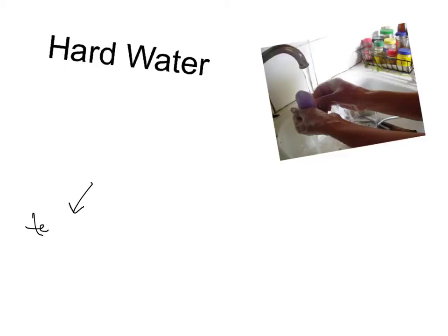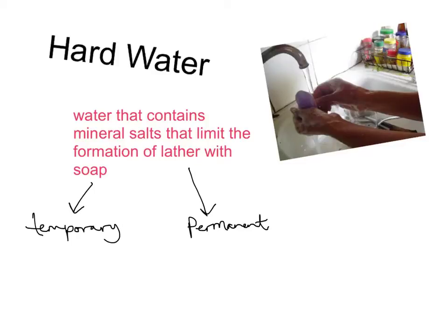It can be temporary or hardness could actually be permanent. Now, temporary hardness is due to the fact that we have calcium hydrogen carbonate in the water. So we have Ca and then it's HCO3, two lots. So that's the chemical formula for calcium hydrogen carbonate. Because we have that in the water, that gives it a temporary hardness. Now, temporary hardness can be removed by just simply boiling the water.